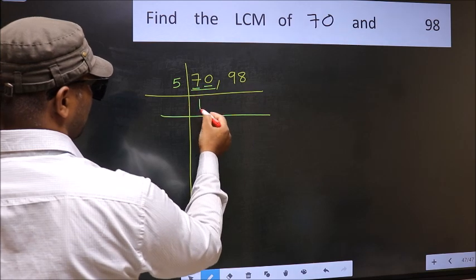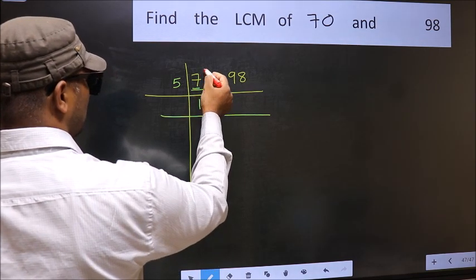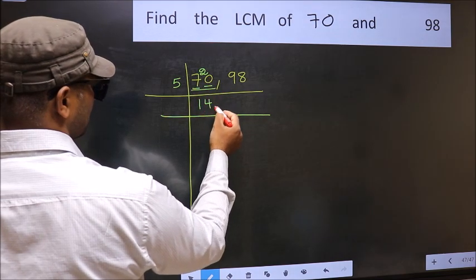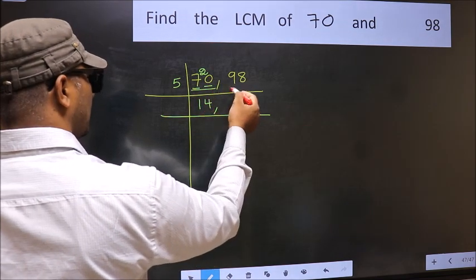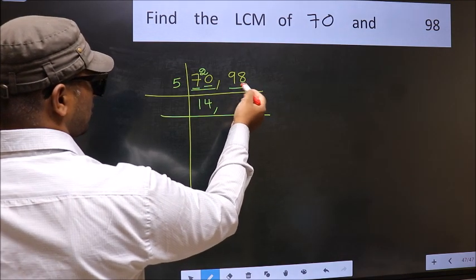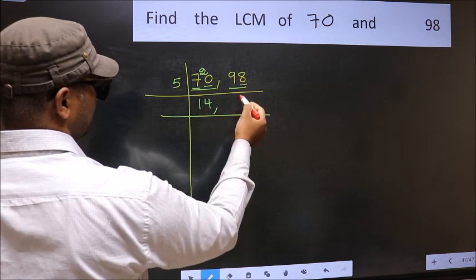The other number 98, last digit is neither 0 nor 5, so this is not divisible by 5. So you write it down as it is.